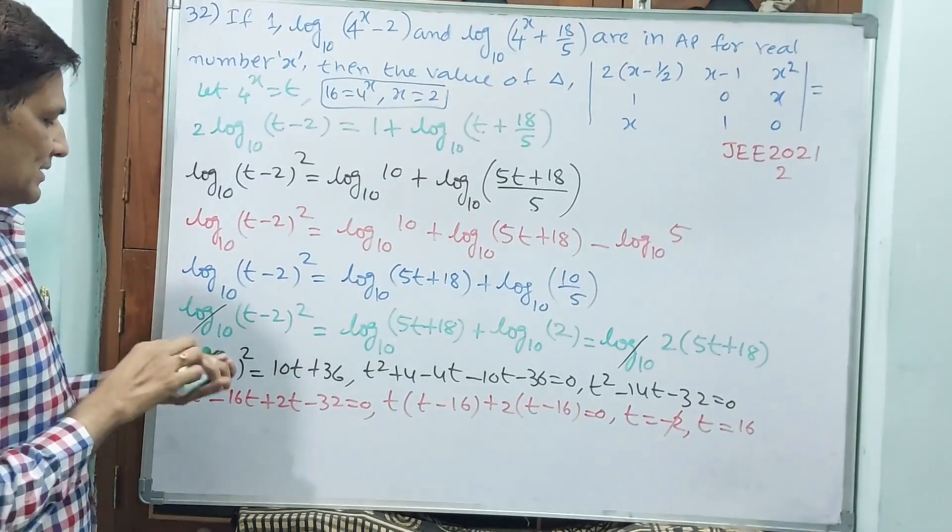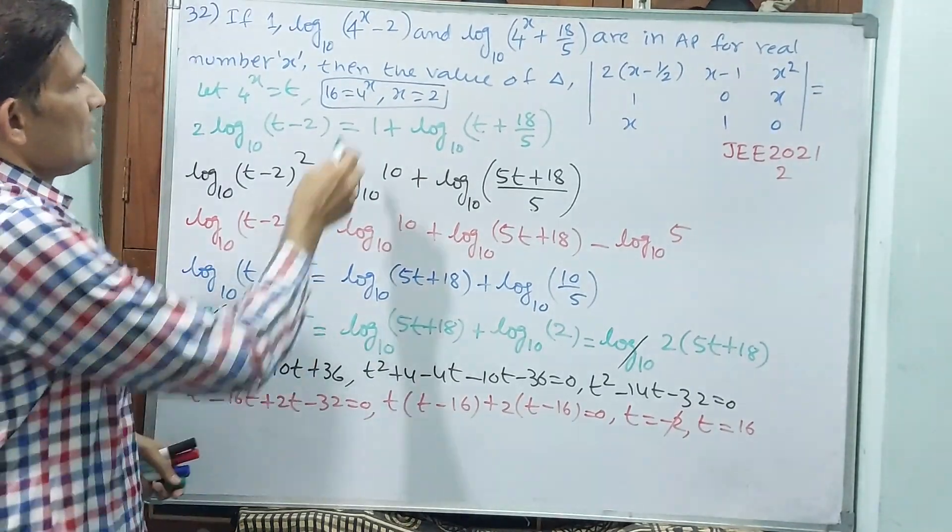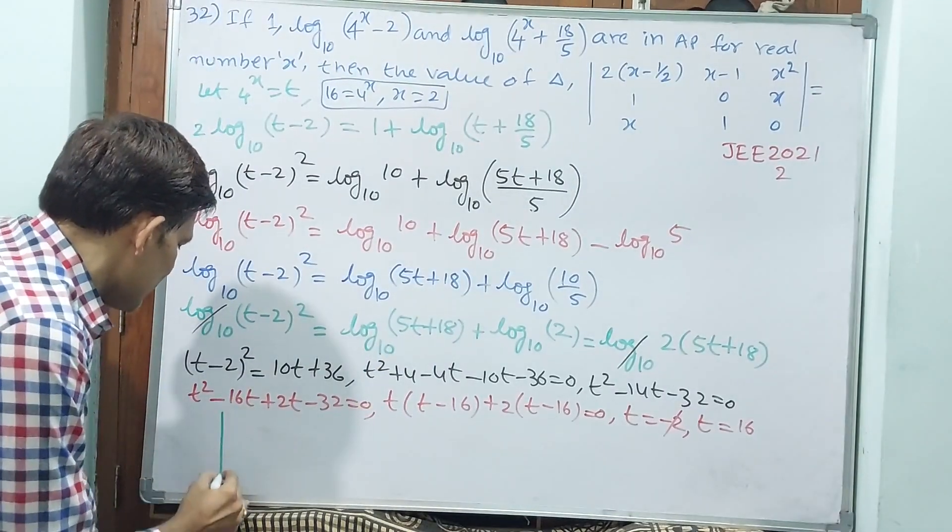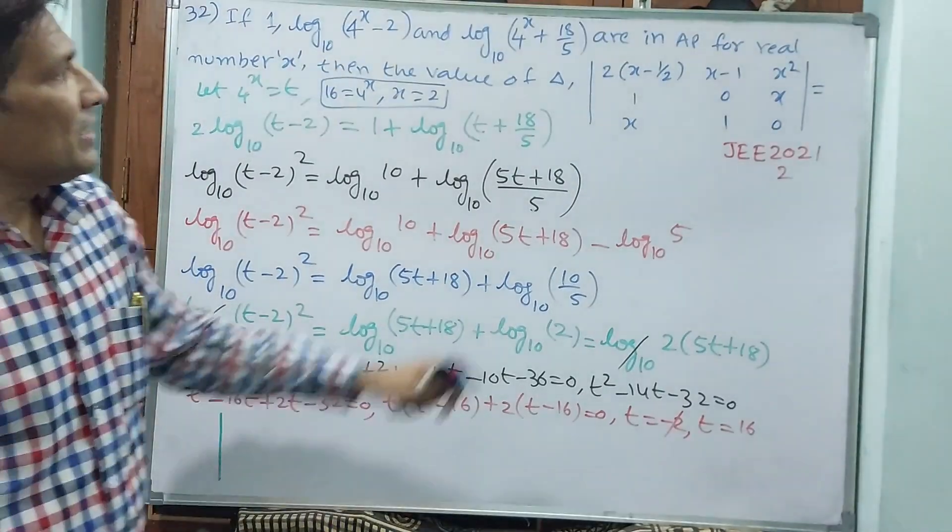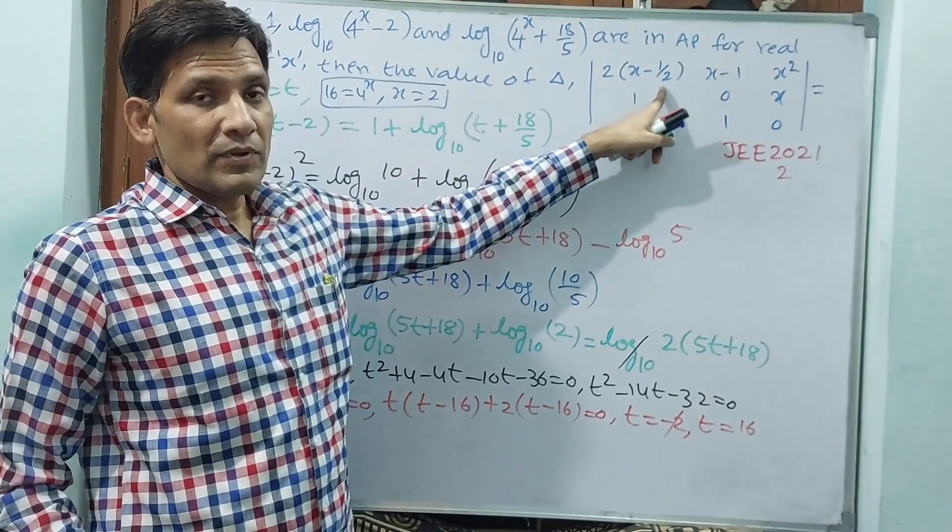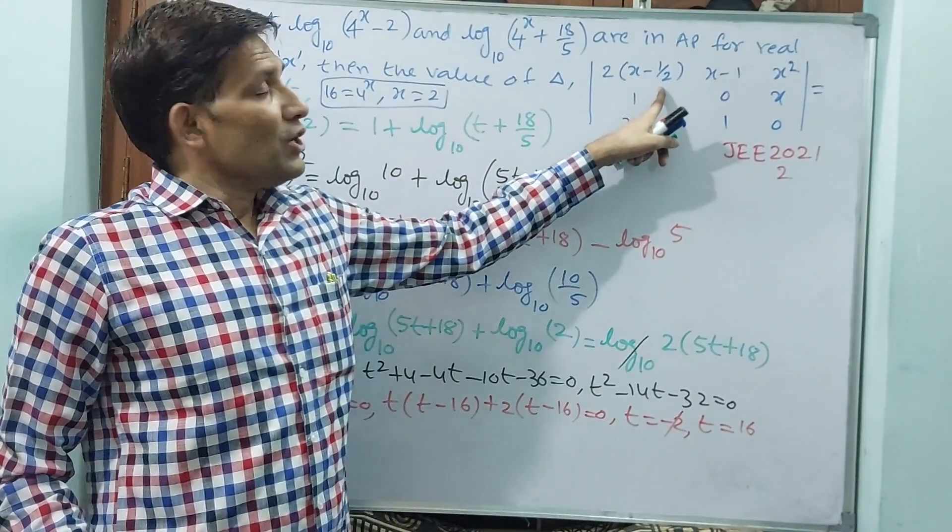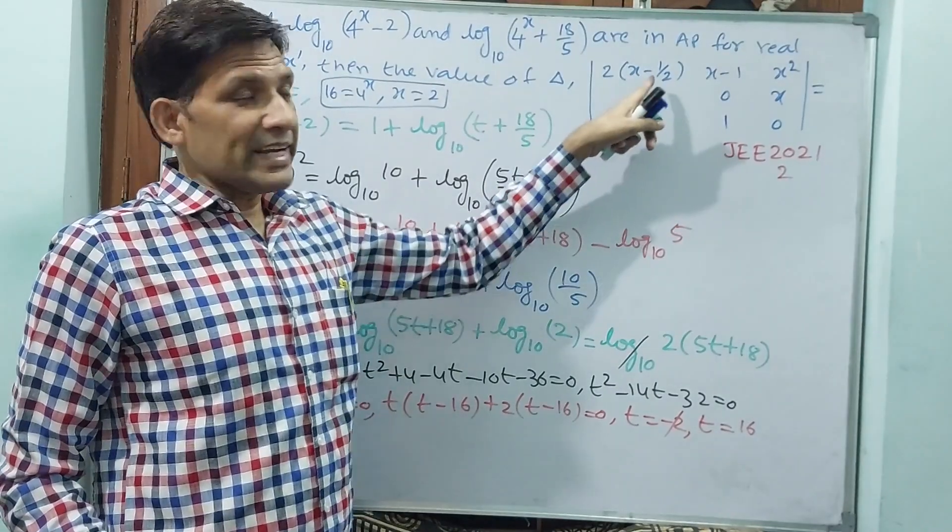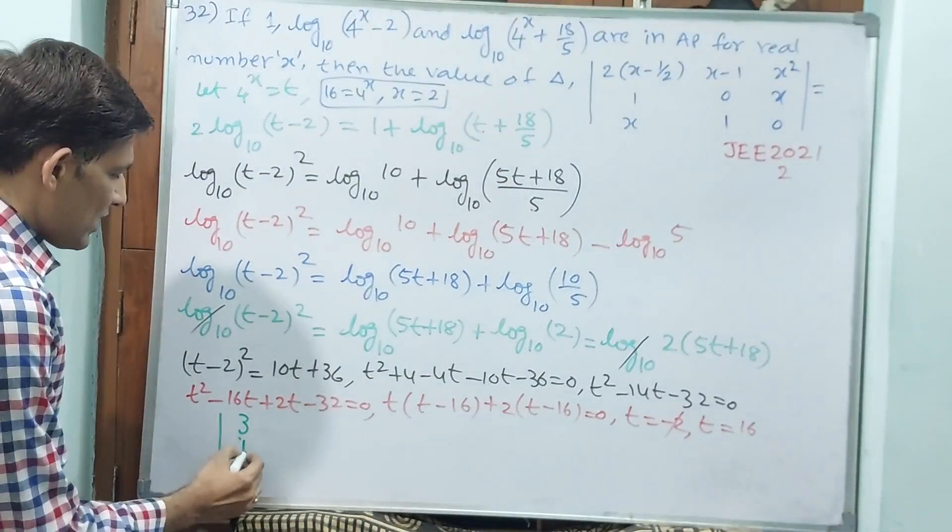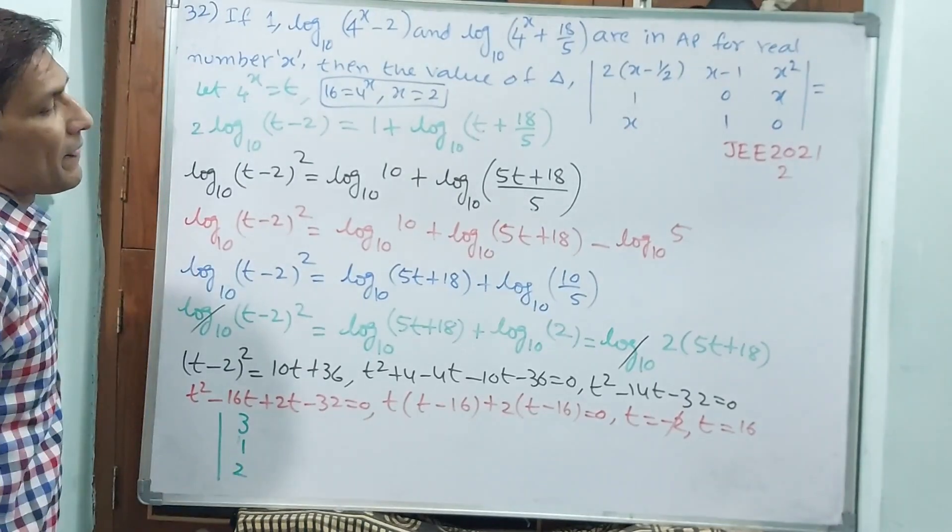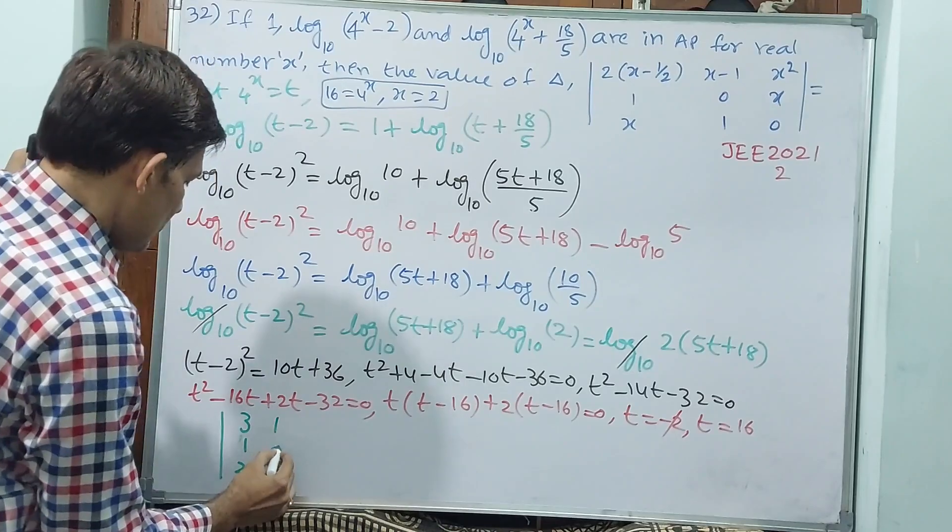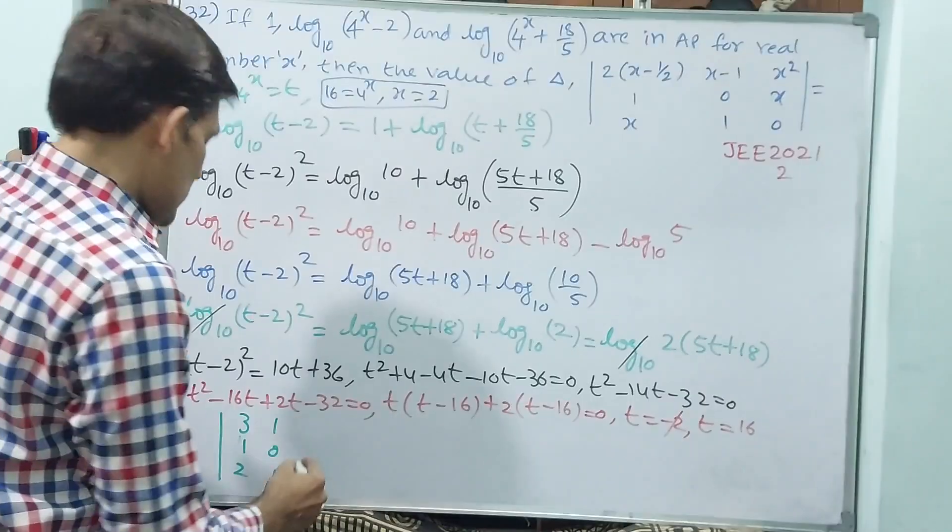You see the determinant, how it is going to come. See here: 2 - 1/2 means 1, 1, 2 means 3/2. 3/2 × 2, what do you have? Cancel of 3. Okay, 1, 2, 2 - 1, 1, 0, 1, 2², 4, 2, 0.